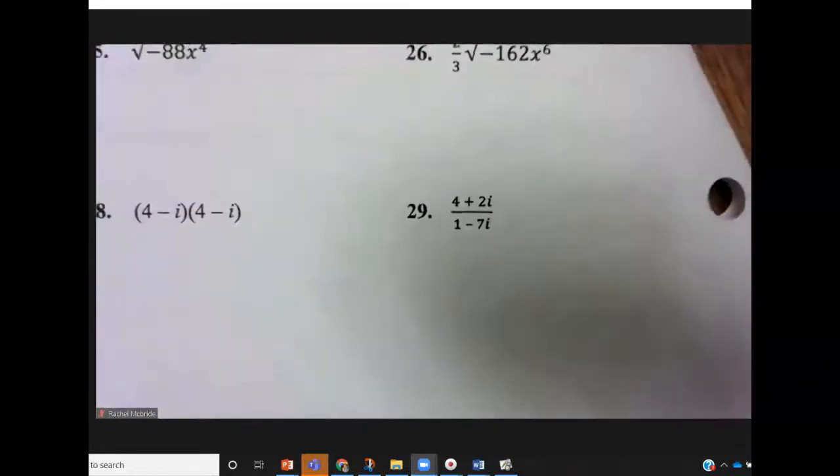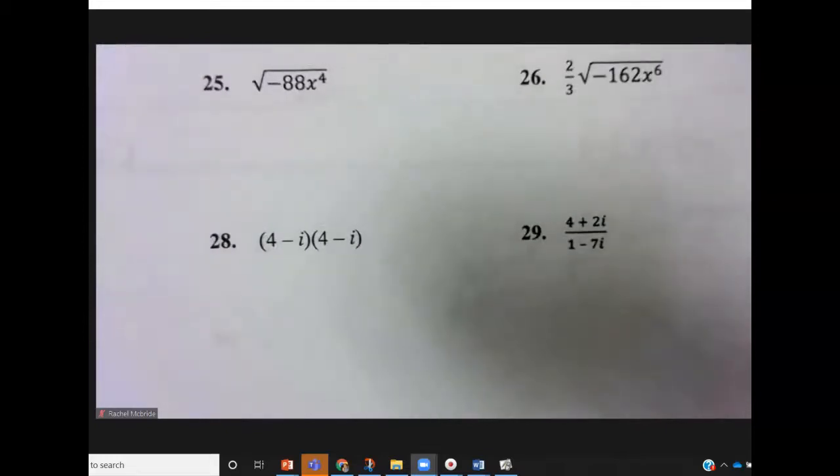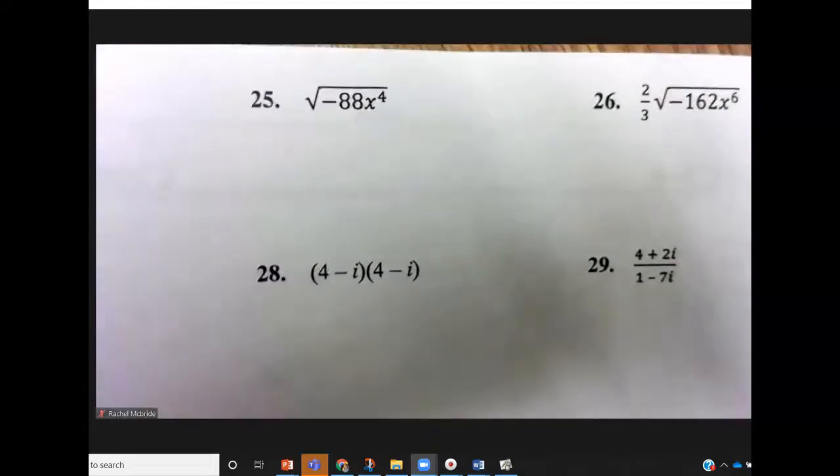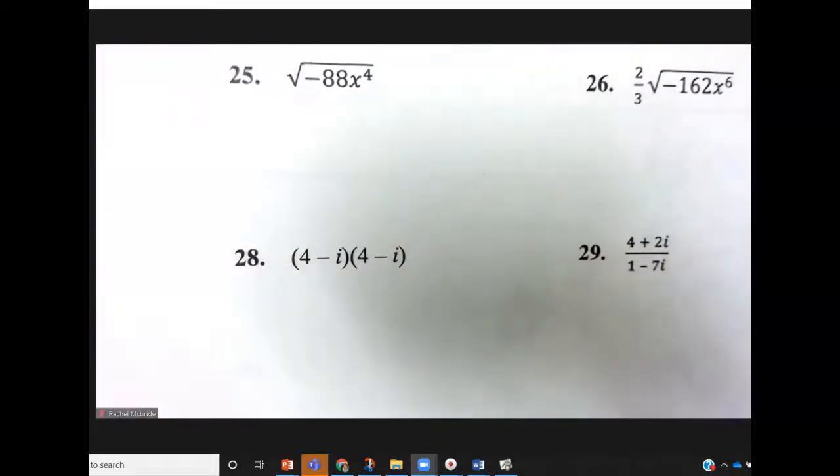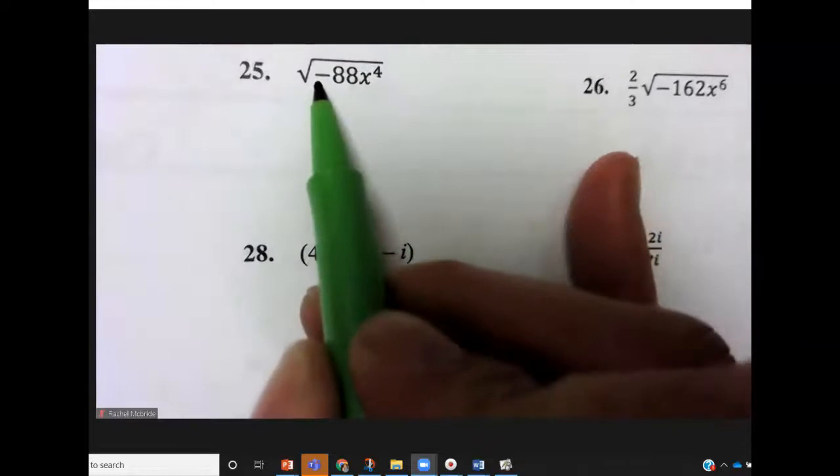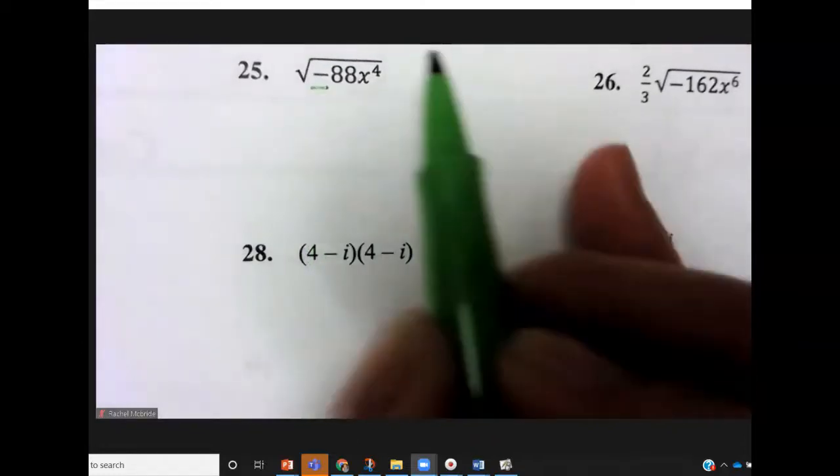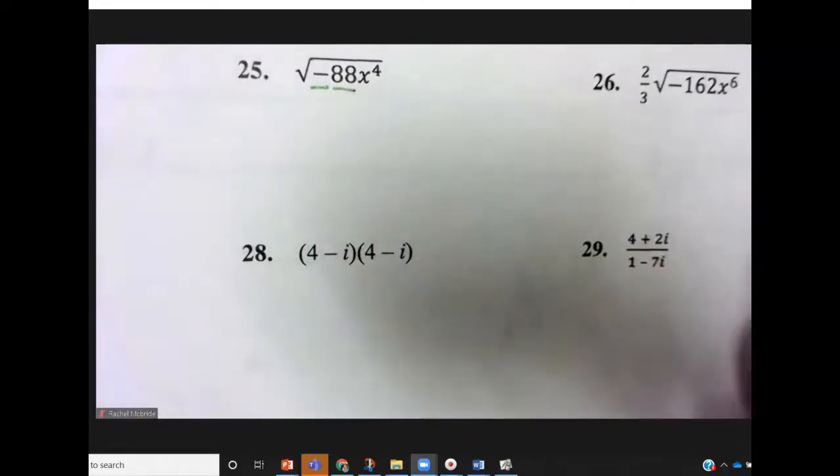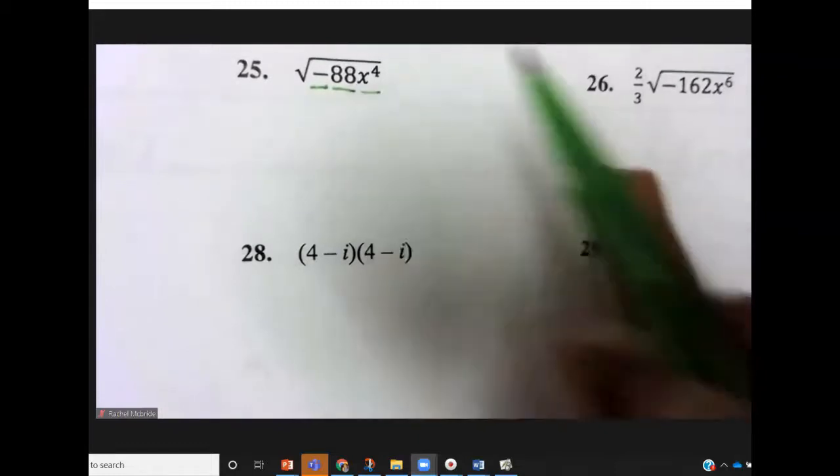Okay, so again these problems are all sorts of scattered. You go from i's to square roots and back again. So let's look at something like 25. So now we're looking at an example where we have a negative, a value, and a variable.